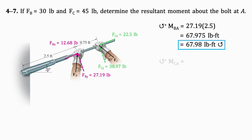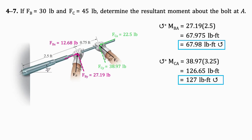Now let's find the moment of FC about A. Just like we did when finding the moment for FB, we will only consider the Y component of force FC. Multiplying the Y component of the force by its distance from A, which is 3.25 feet, we get 127 pound-feet in the counterclockwise direction.